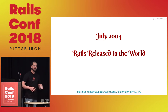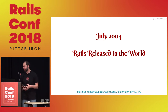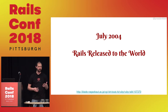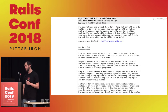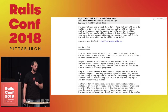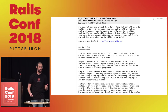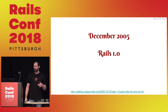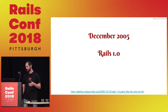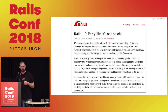This conference has already addressed a lot of history about Rails, so some of this might be repeat — sorry. July 2004, Rails was released. This was the email from DHH to the mailing list: Rails 0.5, it is no longer vaporware. End of 2005, Rails 1.0 was released.